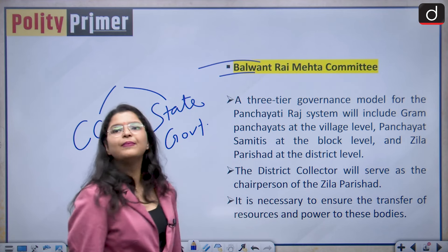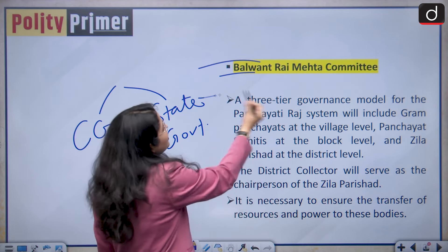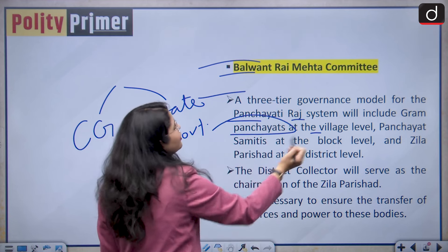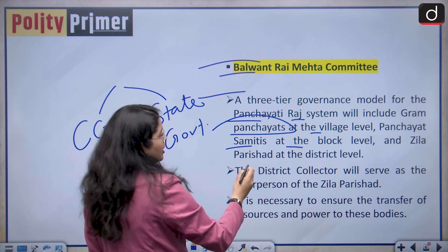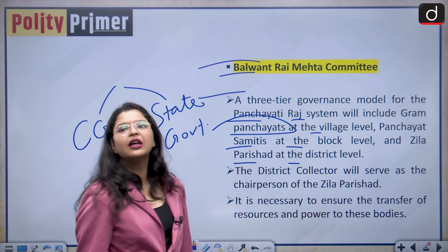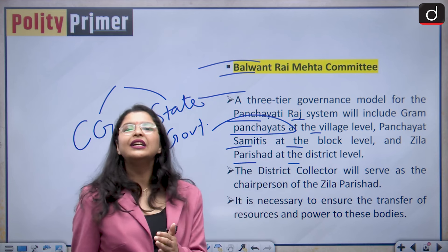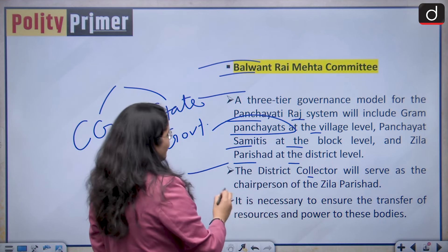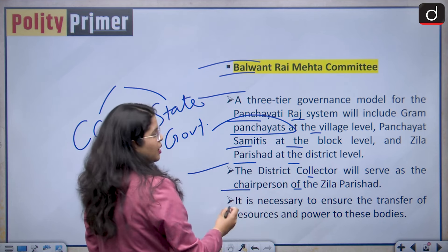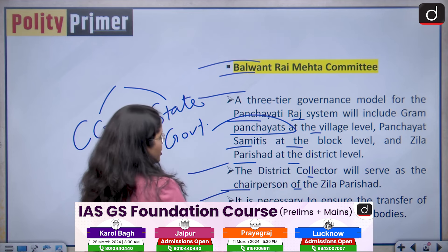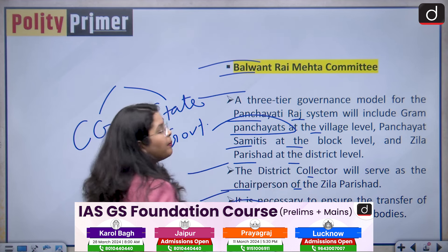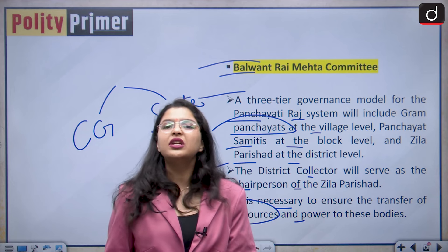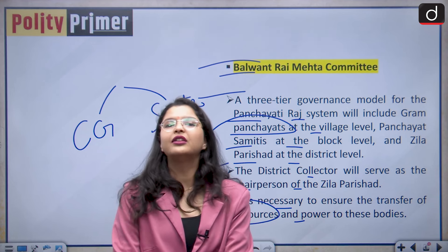The first committee was the Balwant Rai Mehta committee. It recommended a three-tier governance model for the Panchayati Raj system: Gram Panchayats at the village level, Panchayat Samitis at the block level, and Jila Parishads at the district level. The district collector will serve as the chairperson of the Jila Parishad. It is necessary to ensure the transfer of resources and power to these institutions.